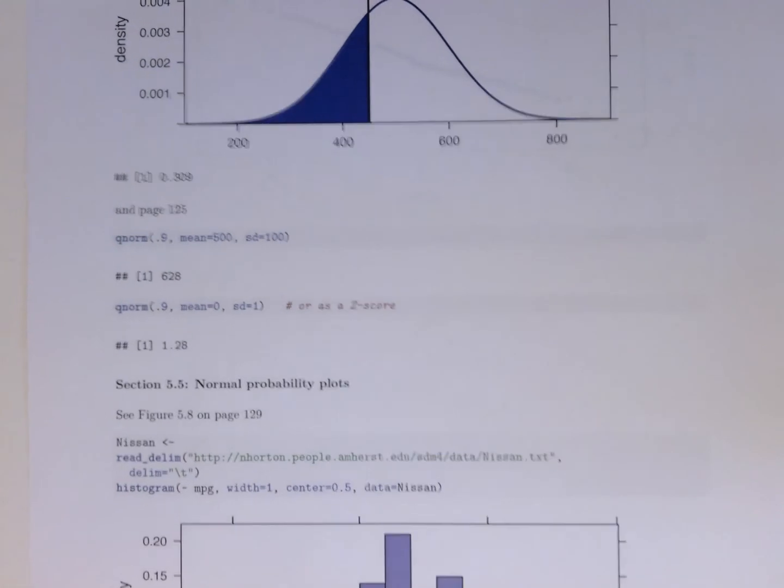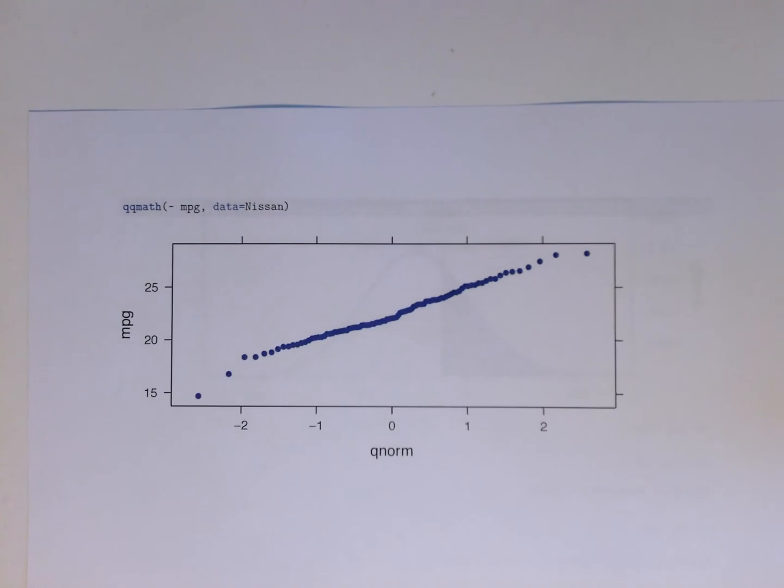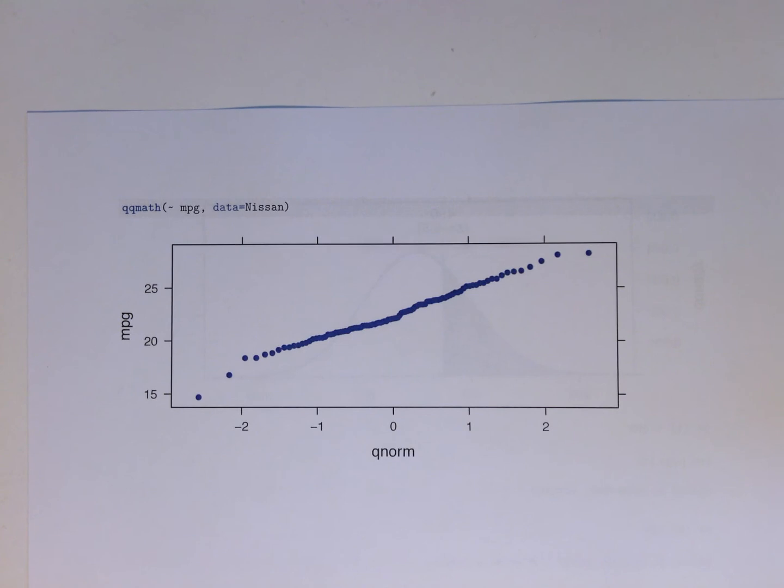Normal probability plots can be generated in lattice using the qqMath function, and here we see the miles per gallon data for the Nissans. Chapter 5 in SDM 4, pretty straightforward way of using the standard deviation as a ruler.